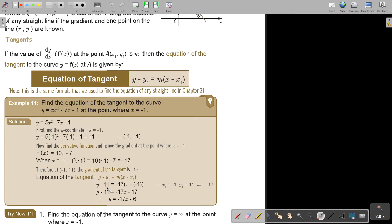Now we're going to use the equation of a straight line formula. And we're just going to substitute that point in, (-1, 11), and substitute the gradient in. And then we're just going to simplify this formula, rearrange it, and we have the equation of that tangent will be y equals -17x minus 6.